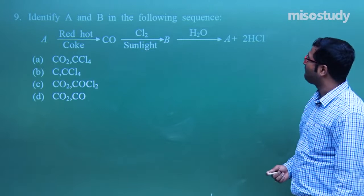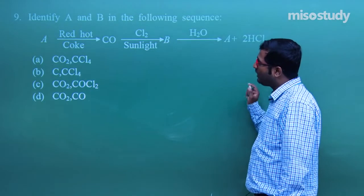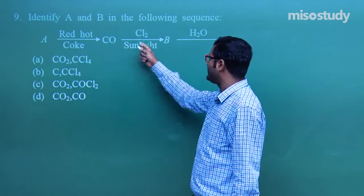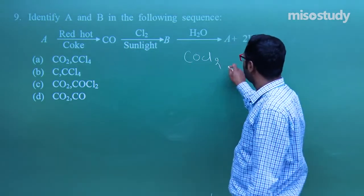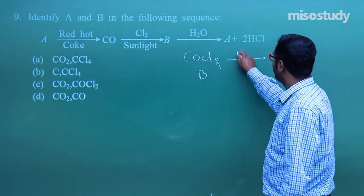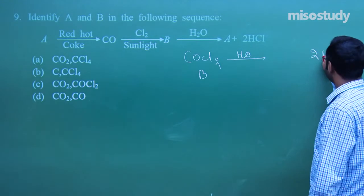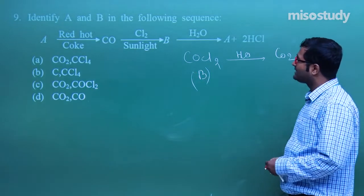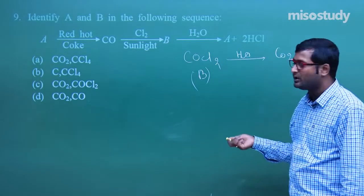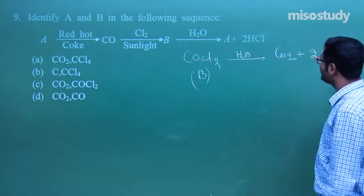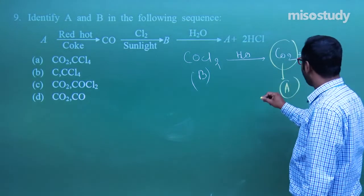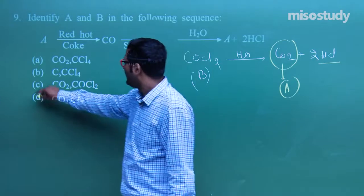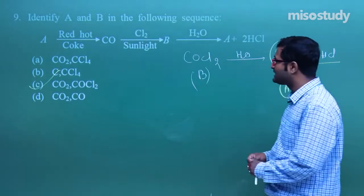Question number 9: identify A and B in the following sequence. Red hot coke gives carbon monoxide; CO on treatment with Cl₂ gives COCl₂ (this is B); COCl₂ on treatment with H₂O gives HCl and CO₂. So A is CO₂ and B is COCl₂. The correct option is C.